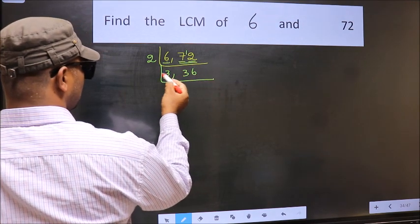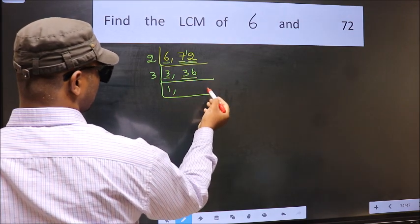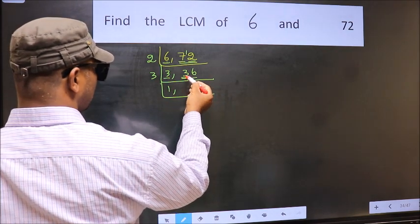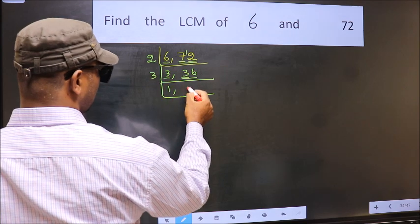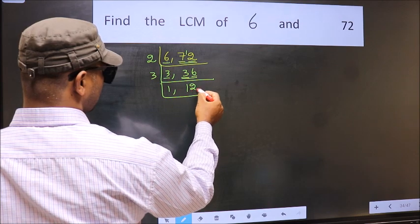Now we have 3. 3 is a prime number, so 3 times 1 is 3. Now the other number, 36. First digit 3. When do we get 3 in the 3 table? 3 times 1 is 3. The other digit 6. When do we get 6 in the 3 table? 3 times 2 is 6.